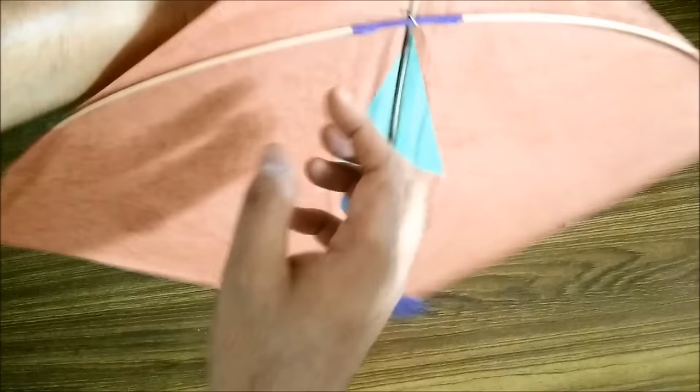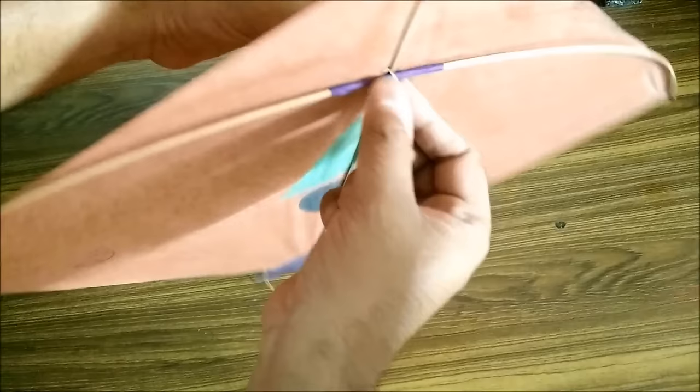So it will look something like this. So you see the knot is tight and now the sticks are together. Now this gives strength to the sticks because they are now tied together here. Like this.